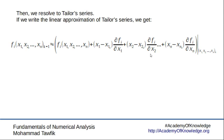The Taylor series for multiple variables can be presented this way, in which f_i — the i-th function — at the k+1 set of x's is equal to f_i, the same function at the k-th iteration, plus the changes we have in the x's times the derivative of the function with respect to each of the variables.